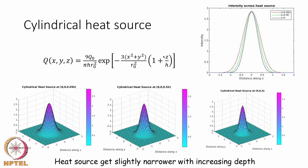As you go from the top surface to the bottom, the thickness is used to indicate that there is a heat source available even in the thickness direction. So the heat source is no longer an XY function but an XYZ function. How does that cylindrical heat source look like?